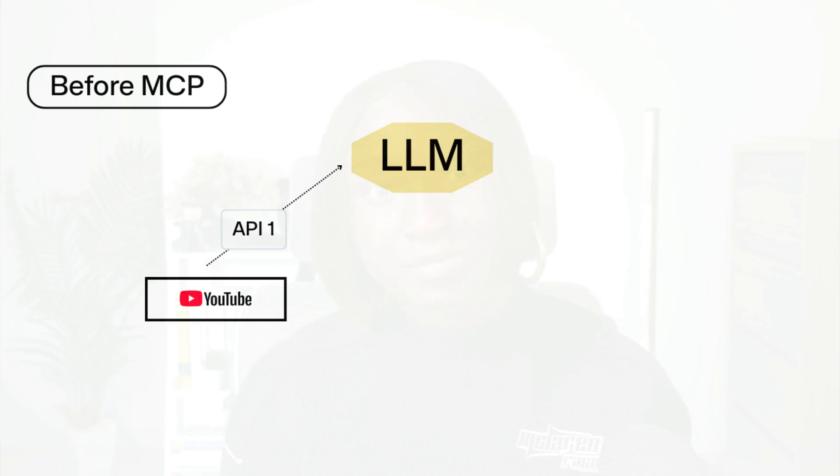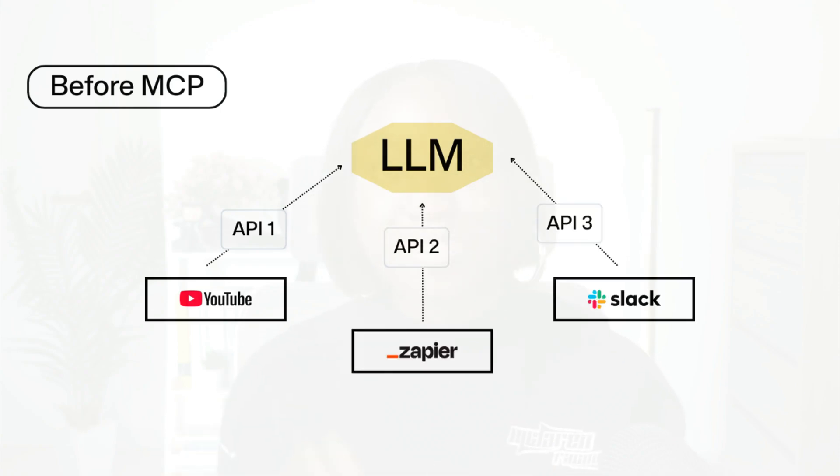Normally, large language models are smart but they have limits. For example, they forget things quickly and they don't have access to your data. Connecting an AI model to external sources is usually messy and repetitive — developers would have to write custom code or use special plugins for each data source or API, and every time you do this you are reinventing the wheel.